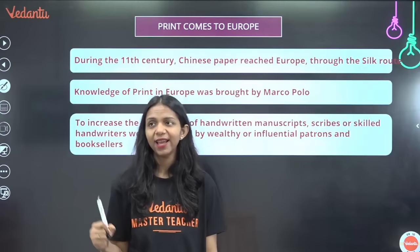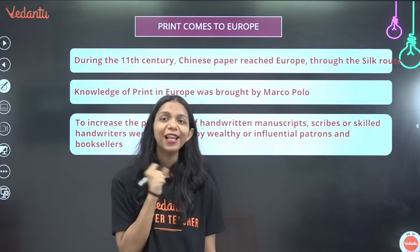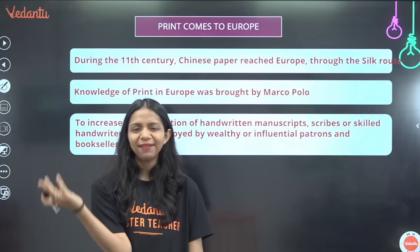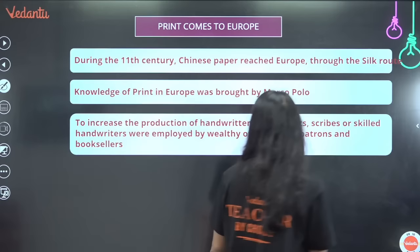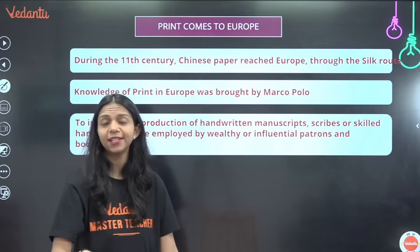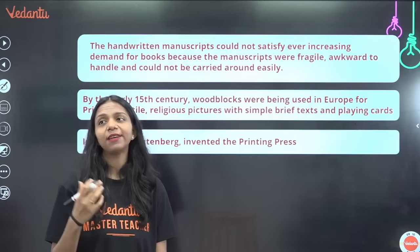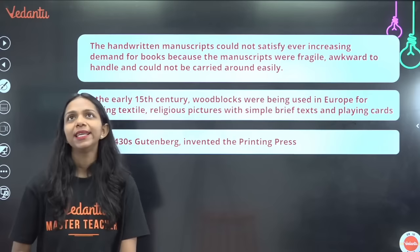Now let's go to Europe and talk about how print spread there. From China, Korea, and East Asia — where paper and print existed — the technology traveled to Europe through the Silk Route. It wasn't that paper just flew there; people traveled, and with them technology and knowledge reached Europe. Marco Polo brought this technology and knowledge to increase the production of handwritten manuscripts. Skilled scribes were employed by wealthy people and booksellers to make copies to sell in the market.